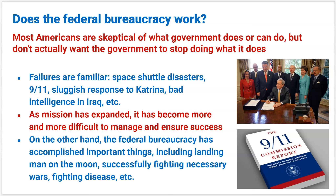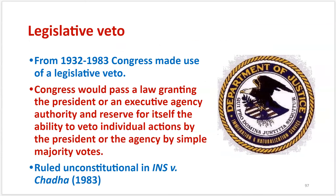Looking at how the federal bureaucracy using policy affects the branches: Congress no longer has the legislative veto power — it's unconstitutional under INS v. Chadha. Congress had tried to use a legislative veto to give the president authority to essentially veto an action an agency takes, but the Supreme Court said that was unconstitutional because it takes away the legislative power Congress should have. The line item veto is similarly unconstitutional.